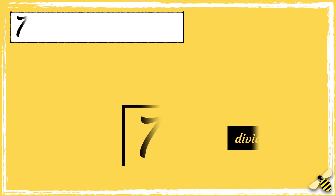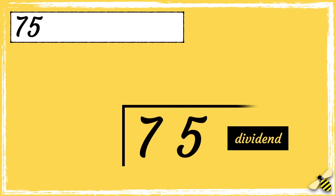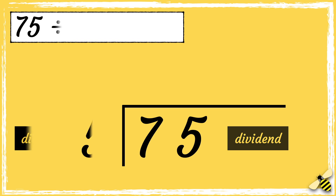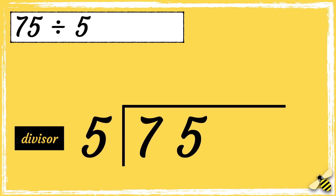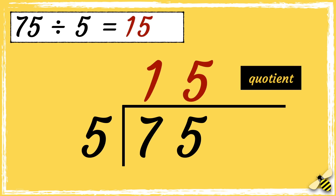Let's have a recap on the key vocabulary used. We have the dividend, which is the number that's being divided. Then we have the divisor, which is the number that we're dividing it by. And when we divide one number by another, the answer is called the quotient.